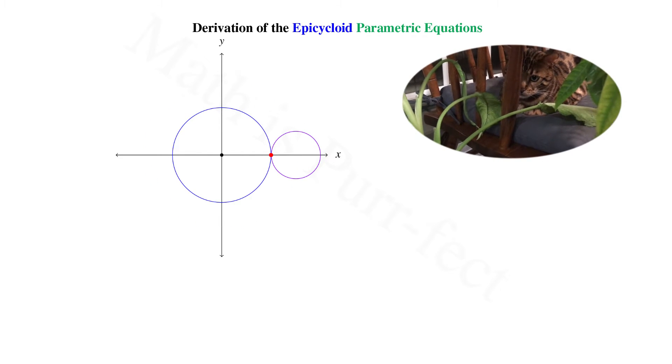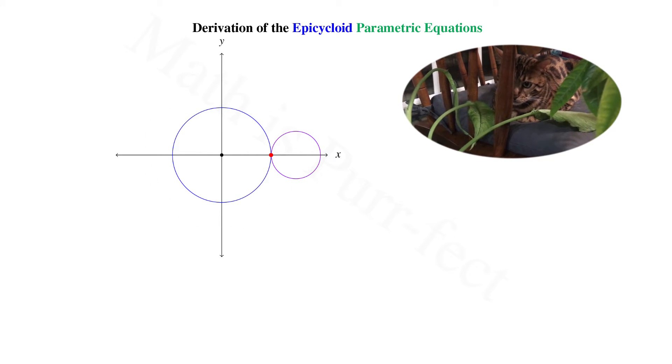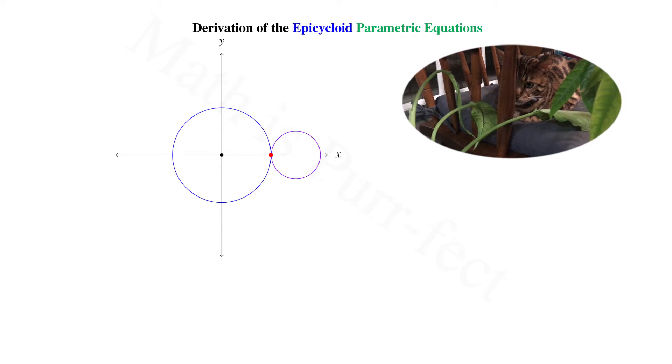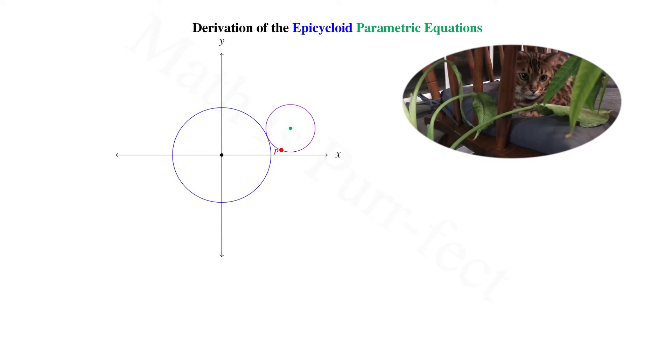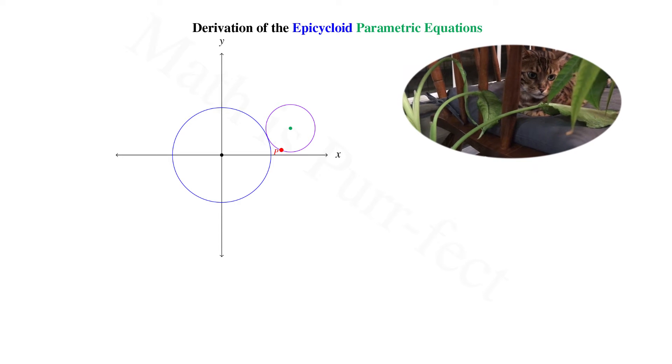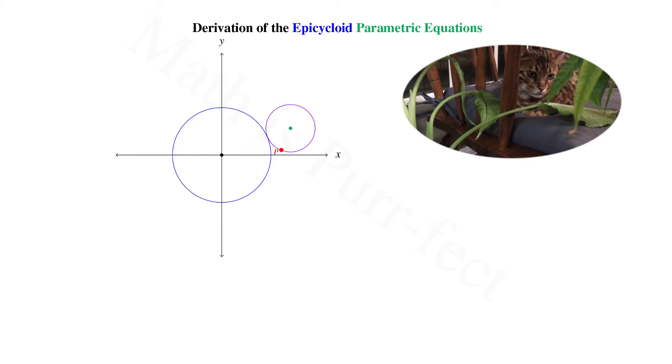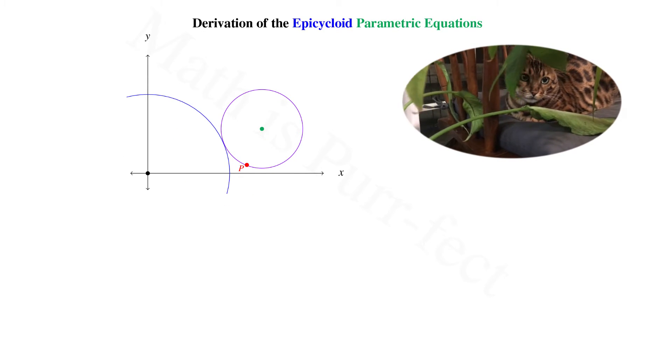The parametric equations for the epicycloid curve correspond to the location of the red dot, call it P, on the outer circle. Let's rotate off the x-axis in order to complete our analysis. Zooming in, I'll call the center of the outer circle O.